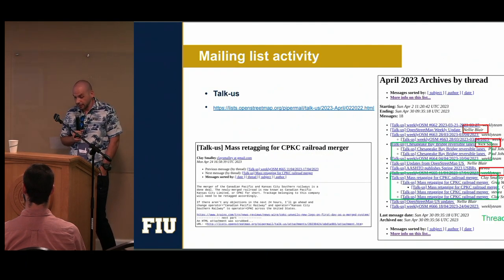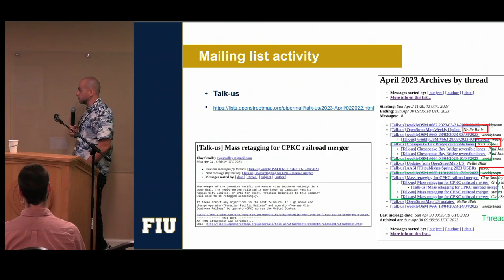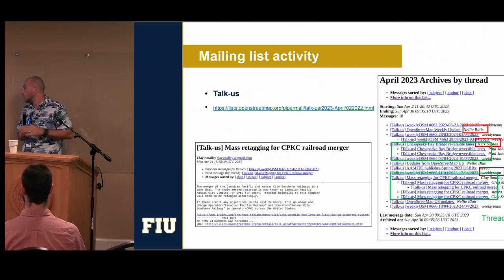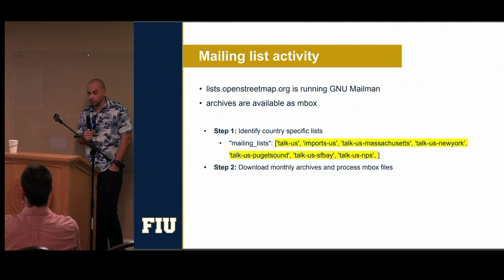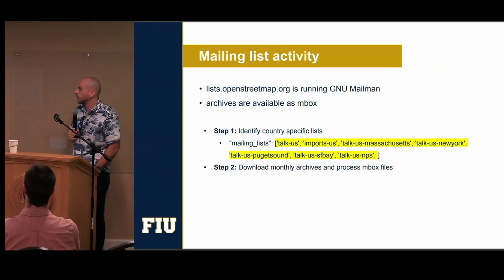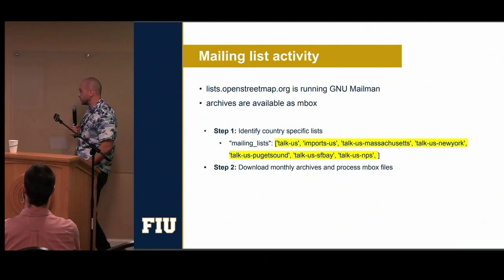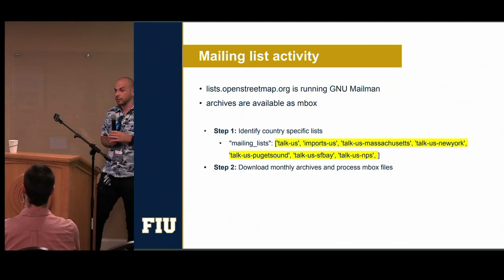Another data source I'm using is mailing lists — for example, the talk-US list is a really great source of information with a lot of good conversations happening. A lot of times this is the place where people agree on tagging practices. If you go to the mailing list archives, you can get a detailed list of all the mails that have ever been sent, including usernames, timestamps, and topics. This mailing list runs on GNU Mailman software, and you can download it in a file format called Mbox — developed in the 80s or early 90s but still very usable. In the first step, I'm identifying all the mailing lists used in the US — talk-US, imports, and more localized ones — and in the next step, I'm building a history of these activities.